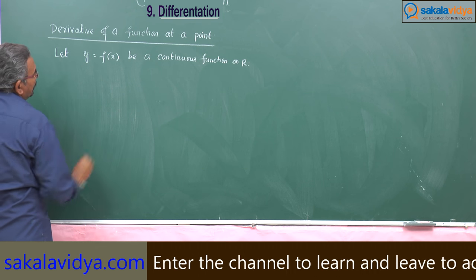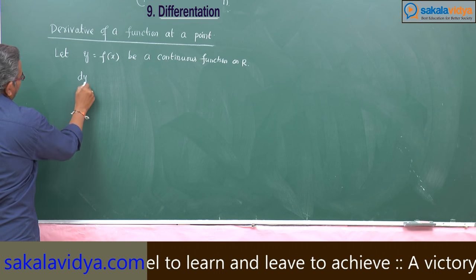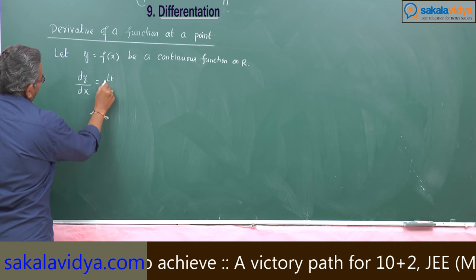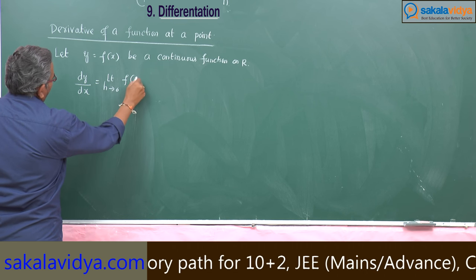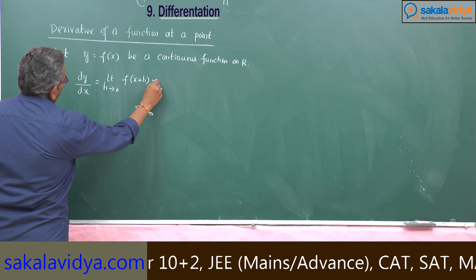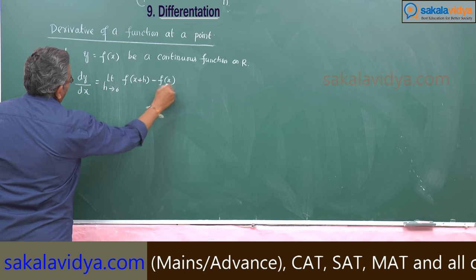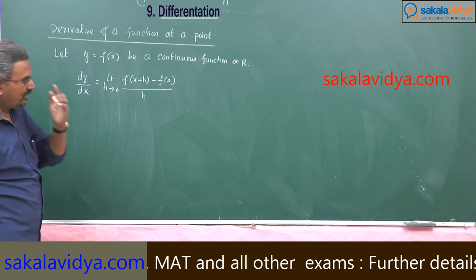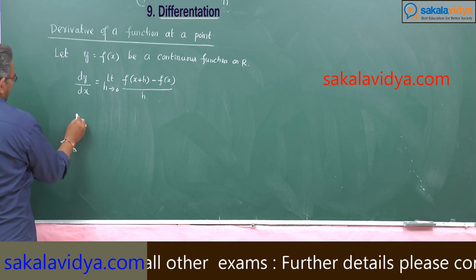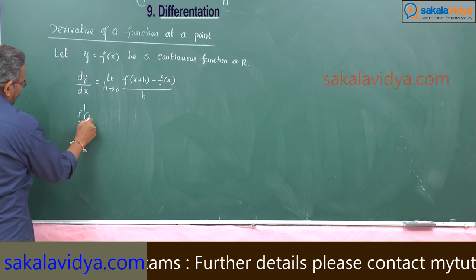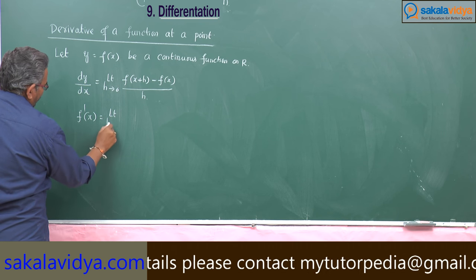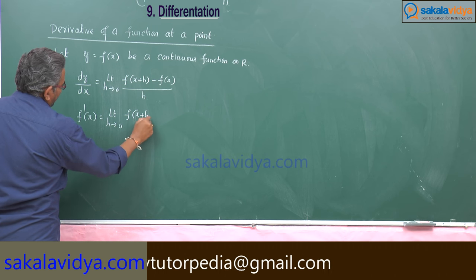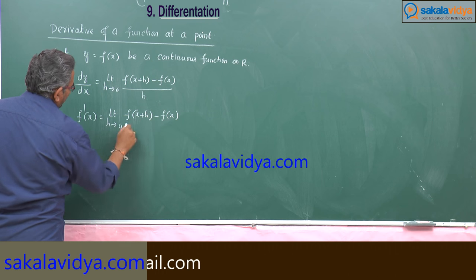We know that dy by dx is equal to limit h tends to 0, f of x plus h minus f of x by h, from the first principles or by definition. In short, dy by dx is nothing but f dash x, which is equal to limit h tends to 0, f of x plus h minus f of x by h.